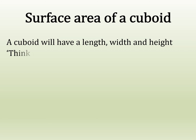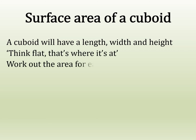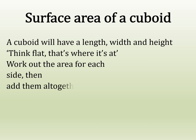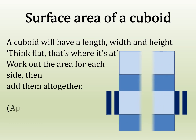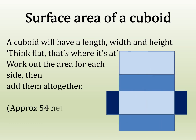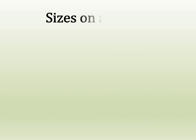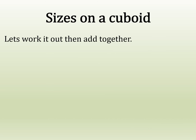A cuboid will have a length, width, and height. We can think flat — that's where it's at. We need to work out the area for each of the sides and then add them all together. You can see the net here is quite different.